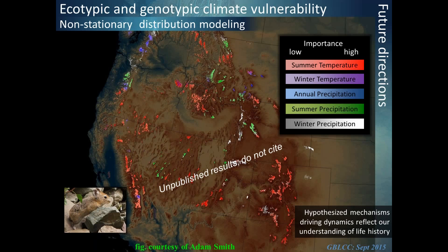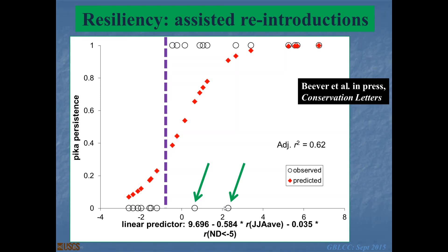We've really been encouraging ourselves to think like a pika. Looking at this regression where sites that have lost pikas and sites that retain them are separated by a purple dashed line, we see that pika persistence aligns against average summer temperatures and how frequently it was very cold. If you're going to be putting pikas back into sites, there's very little utility in placing them back in already-extirpated areas, but placing them in sites right in the midst of extant sites seems a much wiser approach if we get to assisted relocations in the future.